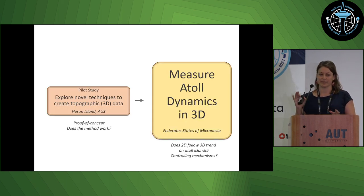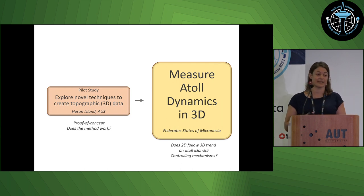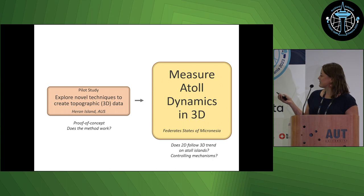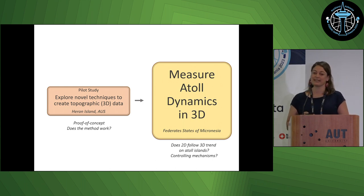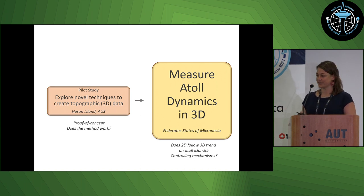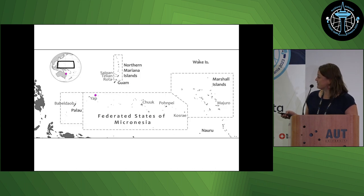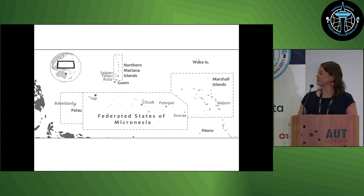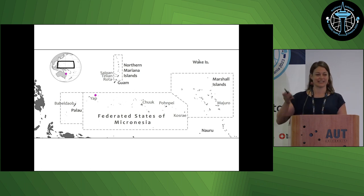I have two major studies. One is a pilot study on Heron Island on the Great Barrier Reef, where the university conveniently has a research station — it's for proof of concept and to see if the technology works. The second project is to measure atoll island dynamics on an atoll in Micronesia and see if the 2D follows the 3D changes. Here we have Heron Island, and here is an atoll called Ulithi Atoll in Yap State in the Federated States of Micronesia, in the northwestern Pacific.